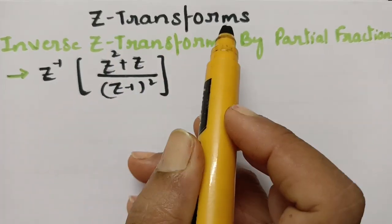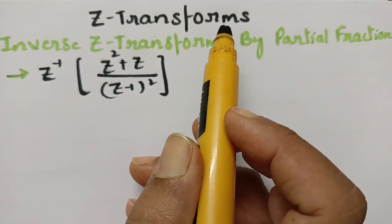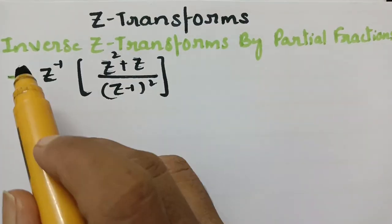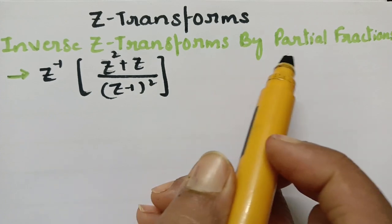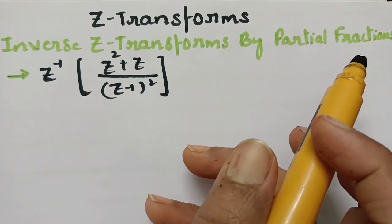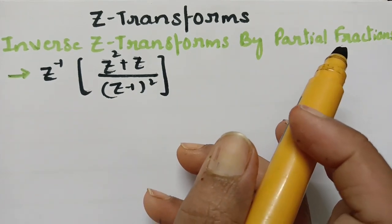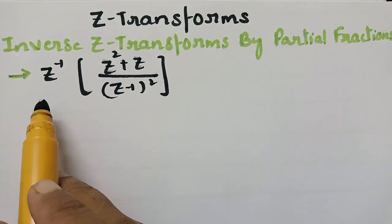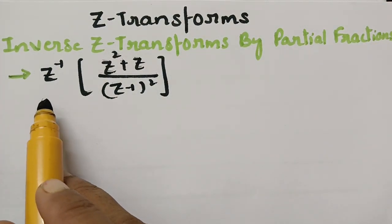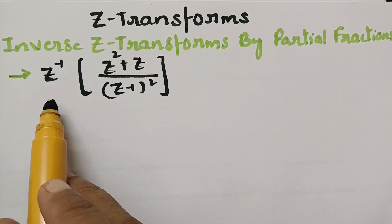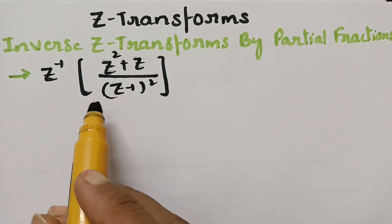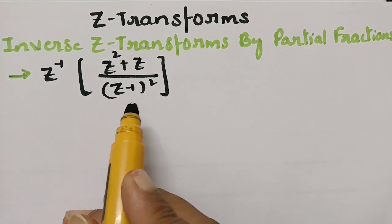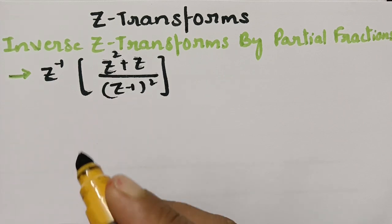Today's video is on Z transforms. We are going to explain inverse Z transforms using partial fractions. The question is: we have to find out Z inverse of (Z² + Z) / (Z - 1)².